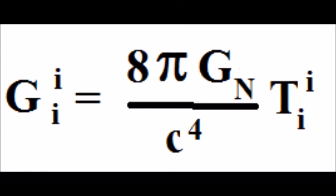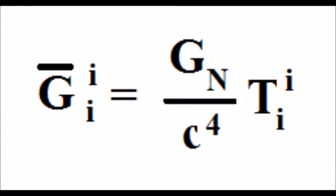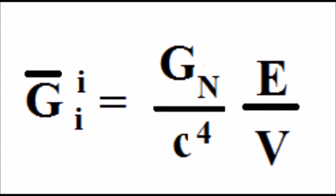Here we contract the tensor indices. Now let's get rid of a pi and adjust Einstein's tensor. Next we convert tensor T to energy E over volume V.